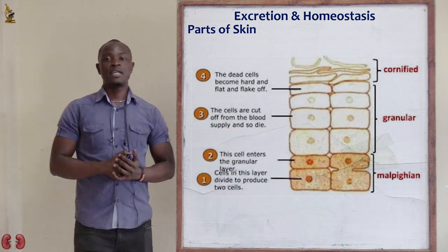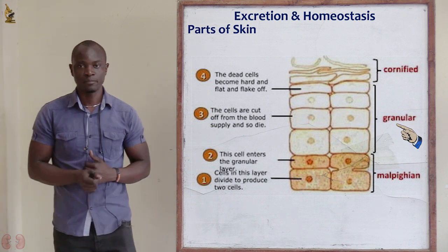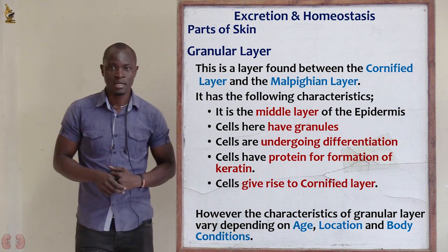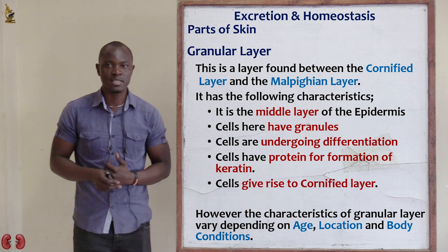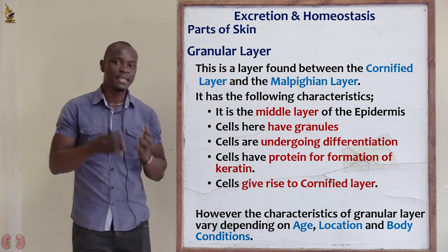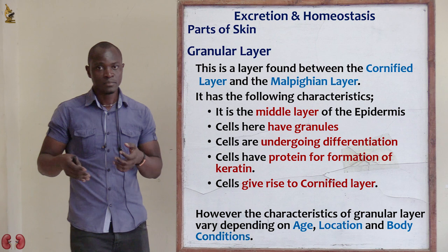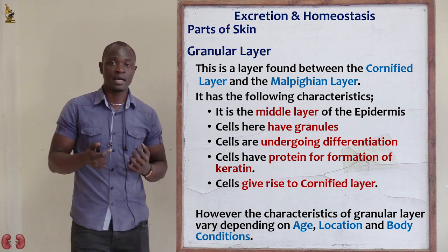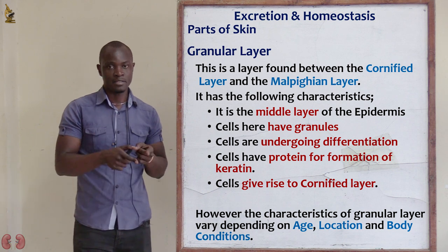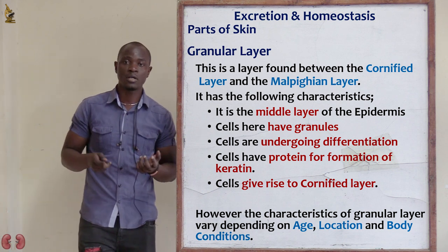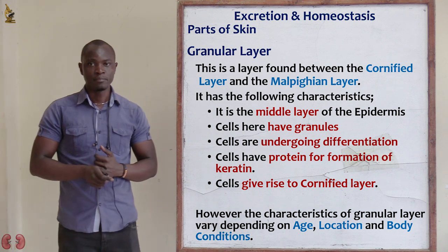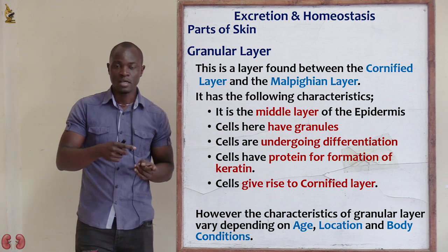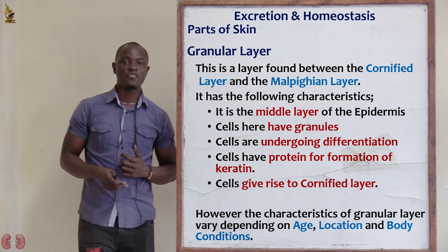The next layer of the epidermis is the granular layer. The granular layer is found between the cornified layer and the malpighian layer, making it the mid layer of the epidermis. It mainly consists of living cells having granules. When these cells die, they move up to form the cornified layer.